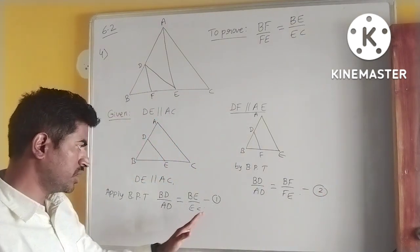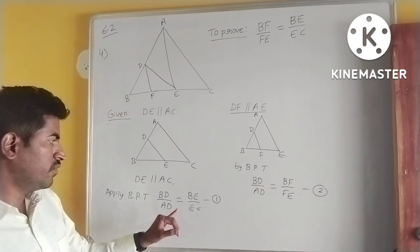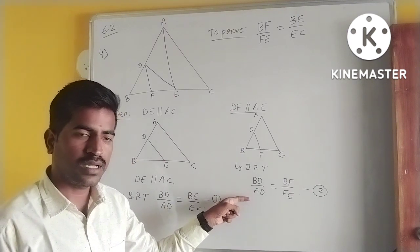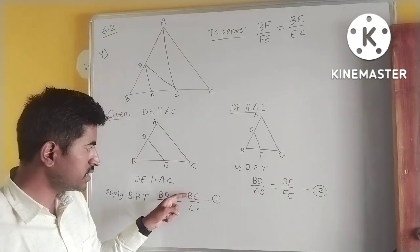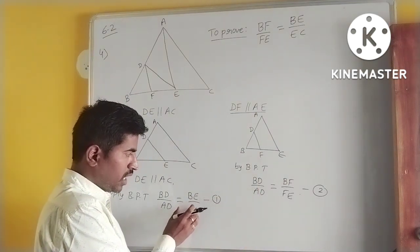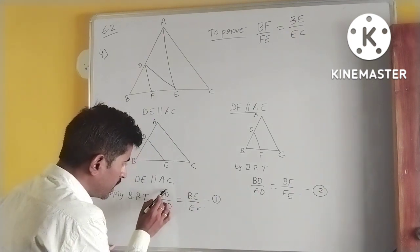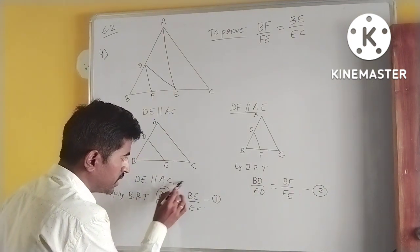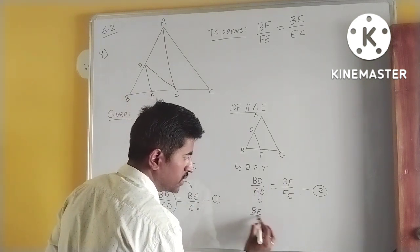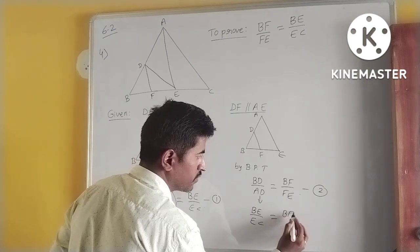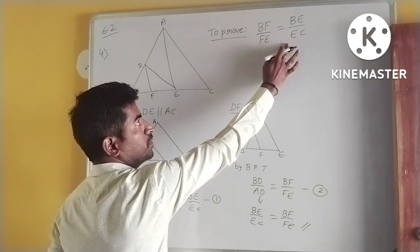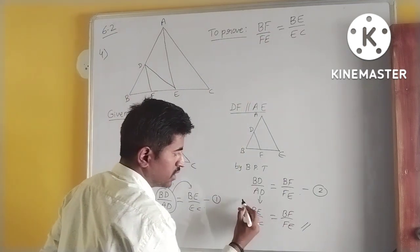Now compare the two equations. In Equation 1: BD by AD = BE by EC. In Equation 2: BD by AD = BF by FE. Since the left-hand sides are equal, I substitute Equation 1 into Equation 2 — in place of BD by AD, I write BE by EC. So BE by EC is equal to BF by FE. This is exactly what we needed to prove, and hence it is proved.